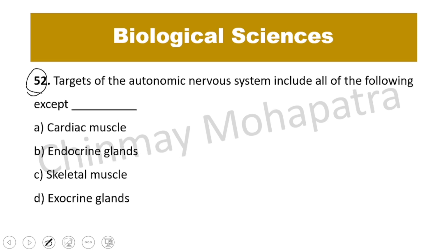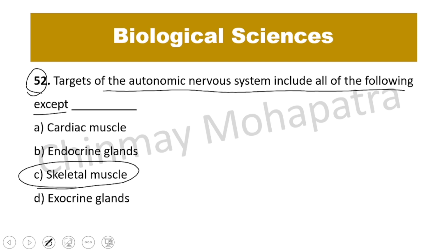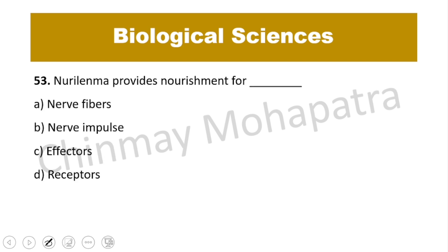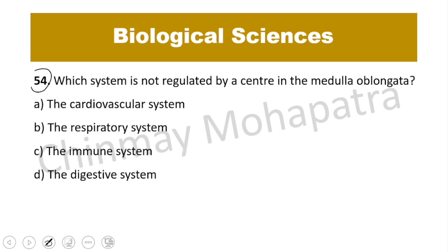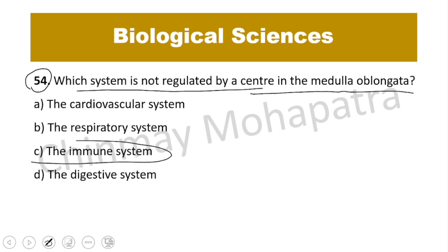Question 52: Targets of the autonomic nervous system include all of the following except — the right answer is skeletal muscles. Question 53: Neurilemma provides nourishment for nerve fibers — that is the right answer. Question 54: Which system is not regulated by a center in the medulla oblongata? It is the immune system — the immune system is the right answer.